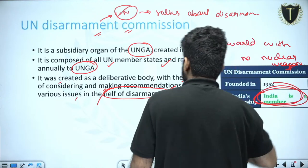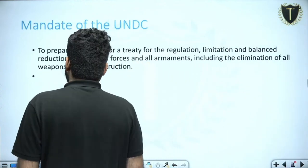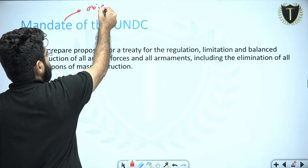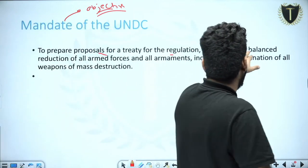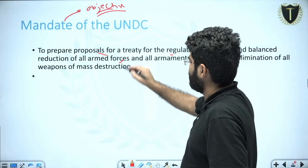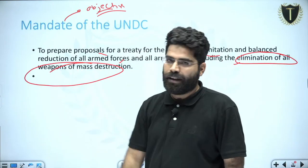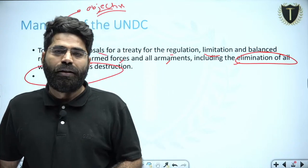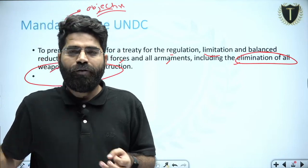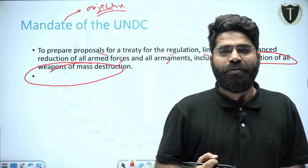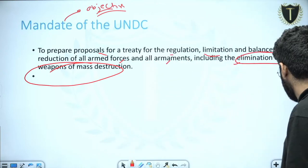Moving on to the mandate of the UNDC — the objective for which this body was created is to prepare proposals for a treaty for the regulation, limitation, and balanced reduction of all armed forces and armaments, including the elimination of all weapons of mass destruction — whether it is an atomic bomb, hydrogen bomb, or nuclear bomb. It has been striving hard to eliminate all forms of weapons of mass destruction.